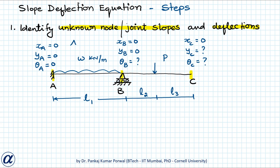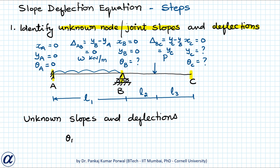In the slope deflection method, we consider relative deflection of the right end with respect to the left end. For segment AB, δ_AB = y_B − y_A = 0, since both are zero. For segment BC, δ_BC = y_C − y_B = y_C. Therefore, the unknown slopes and deflections for this beam are θ_B, θ_C, and δ_BC.